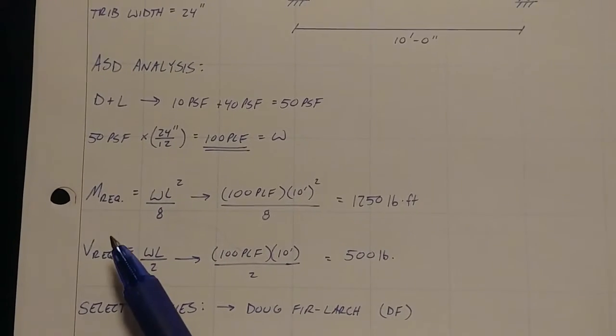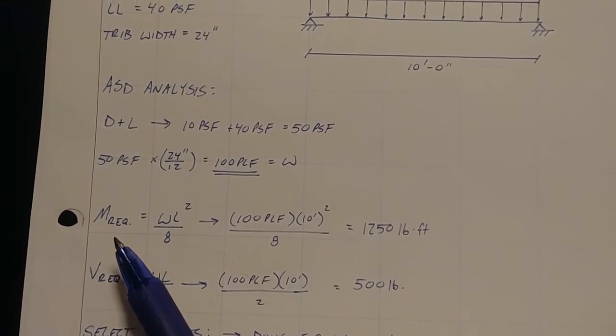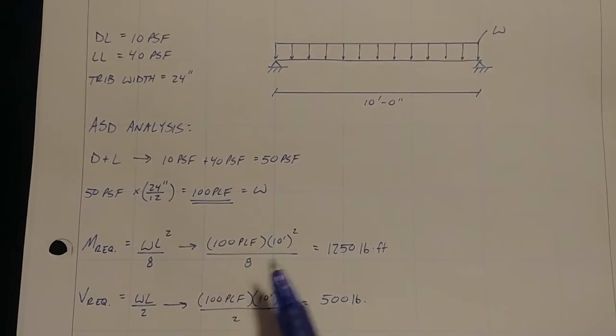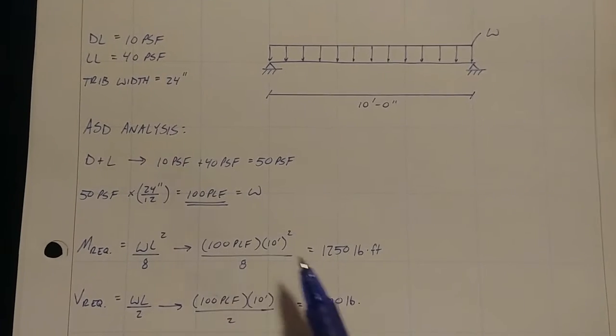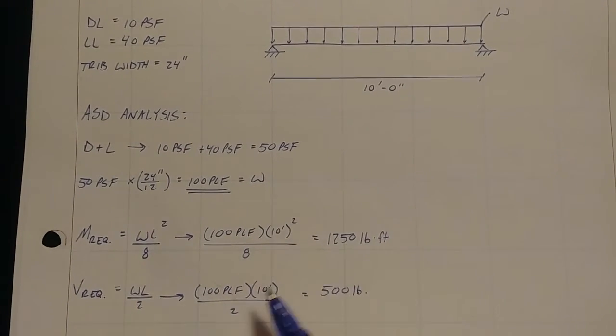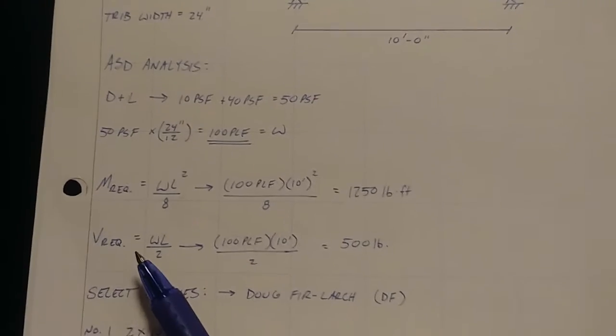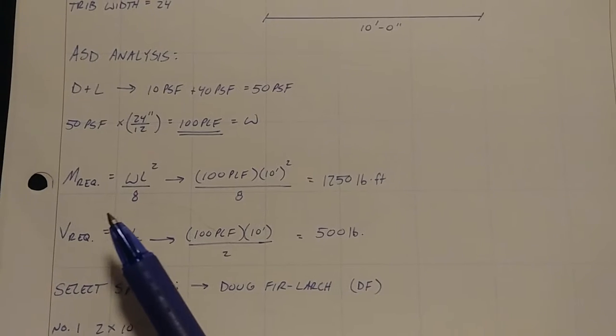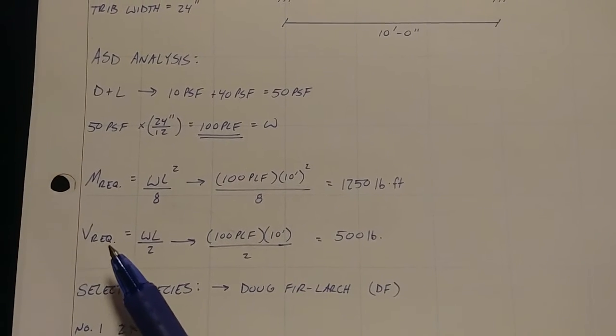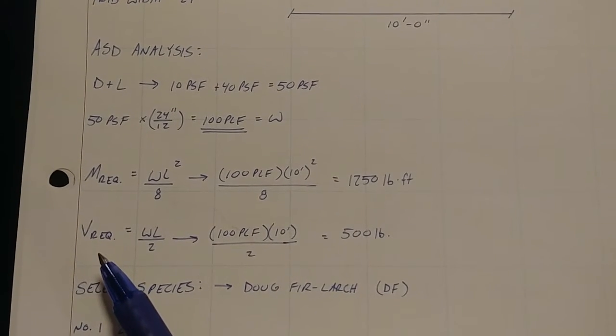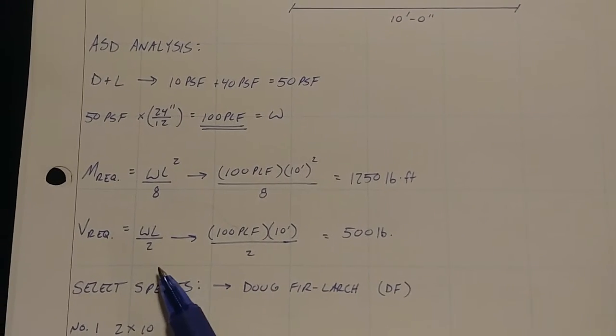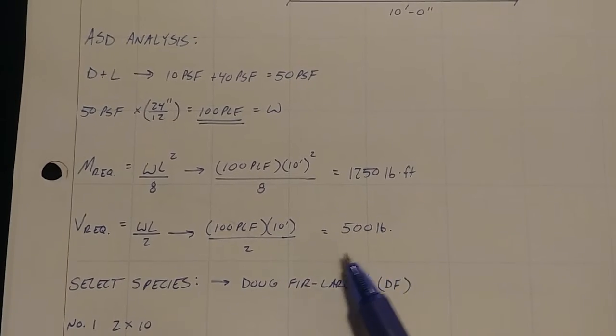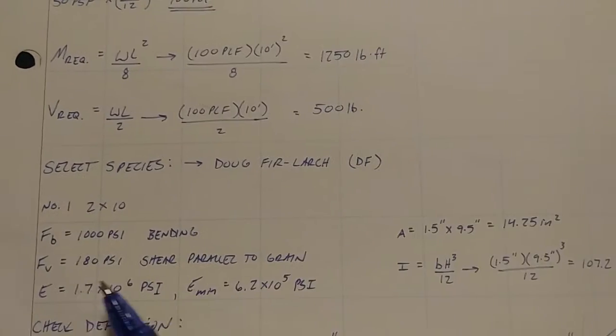Next, we need our required moment. And that's just WL squared over eight. So 10 foot span, 100 PLF as W gets you 1250 pound feet. And shear. Today we're going to be doing both bending capacity of the beam as well as shear capacity of the beam. Required shear WL over two, and that gets you 500 pounds. Easy so far. We know how to do that stuff.